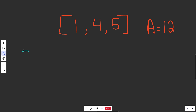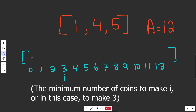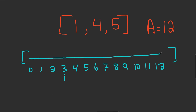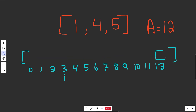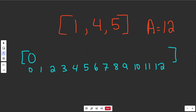The idea is to make an array with 13 positions — indices 0 to 12 inclusive. Each index i stores the minimum number of coins it takes to make that amount. We build this bottom up, starting at our base case of 0. The base case is: what is the minimum number of coins to make 0? You don't need any coins, so it's 0. The rest of the positions we'll fill with zeros initially.